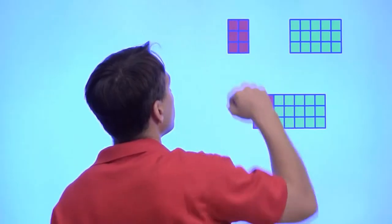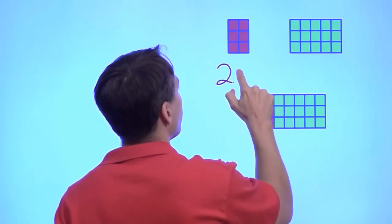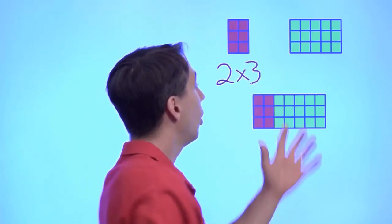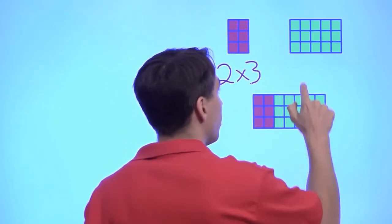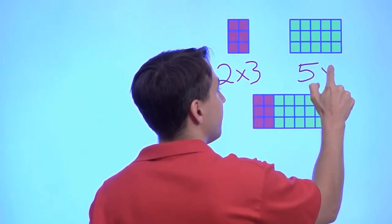So now let's go ahead and do both of these counts. This little rectangle over here has two columns. Each column has three squares. That's two times three little squares. Over here we have five columns, each with three little squares. That's five times three.